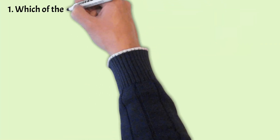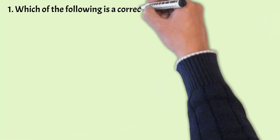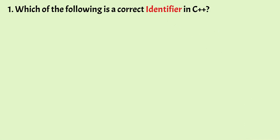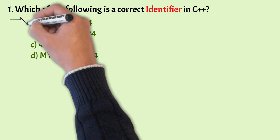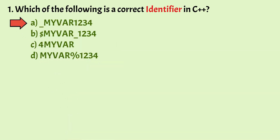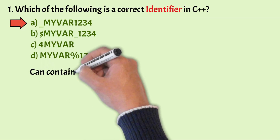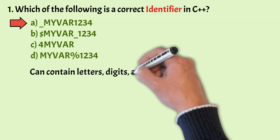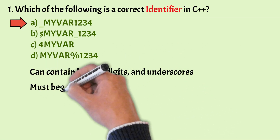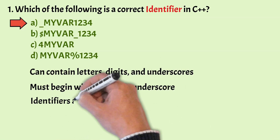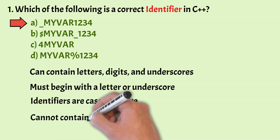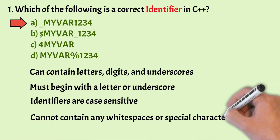Let's start with the first one. Which of the following is a correct identifier in C++? The correct answer is option A. An identifier can contain letters, digits and underscores. It must begin with a letter or underscore. An identifier is case sensitive and it cannot contain any white space or special characters.